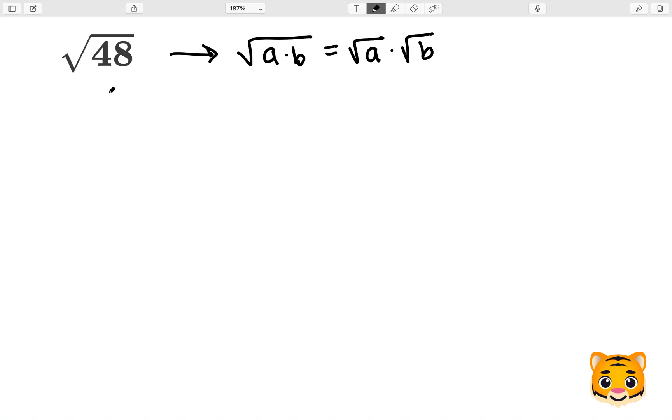Now to apply this to 48, we first need to look at some of the factors of 48, which include 16 and 3. While there are other factors of 48, I chose 16 and 3 because 16 is a perfect square, and this will help us simplify in the future.